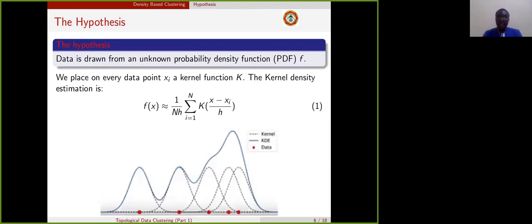Just like in any density-based clustering algorithm, tomato makes an assumption, which is data is drawn from an unknown probability distribution function f. But the problem is that we don't know f. We don't know the probability density function.